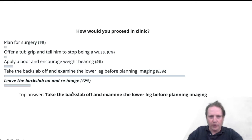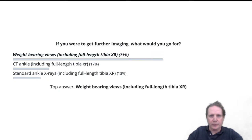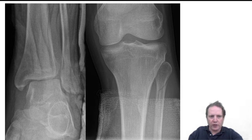If you were to get further imaging, what would you go for? Weight-bearing views including full-length tibia was the majority answer. This is what was done — weight-bearing radiographs showing opening of the medial clear space, opening of the syndesmosis, and we now know that we have a high fibular fracture.